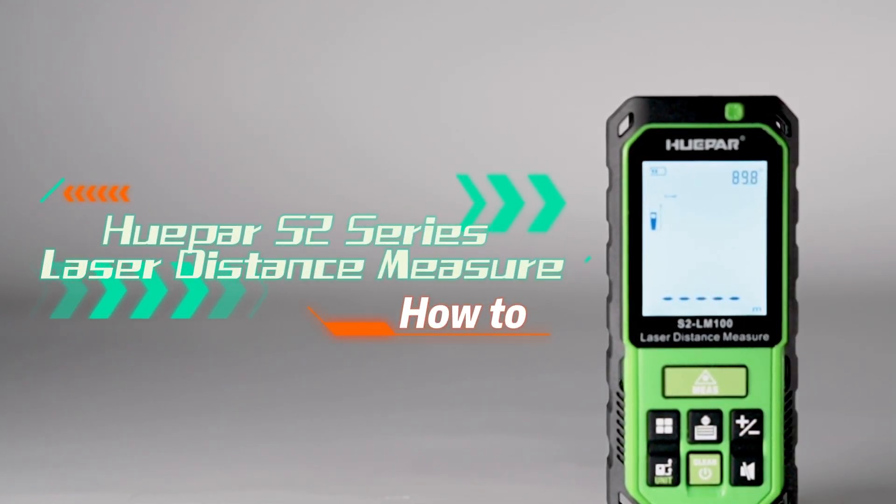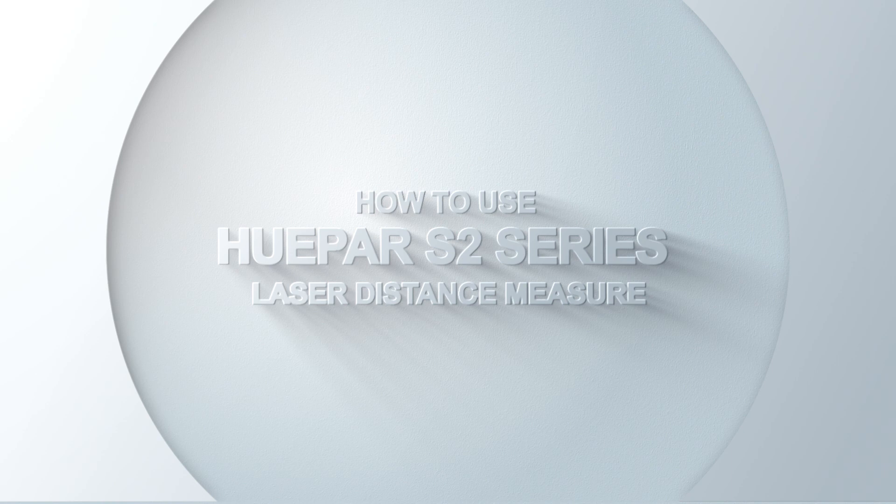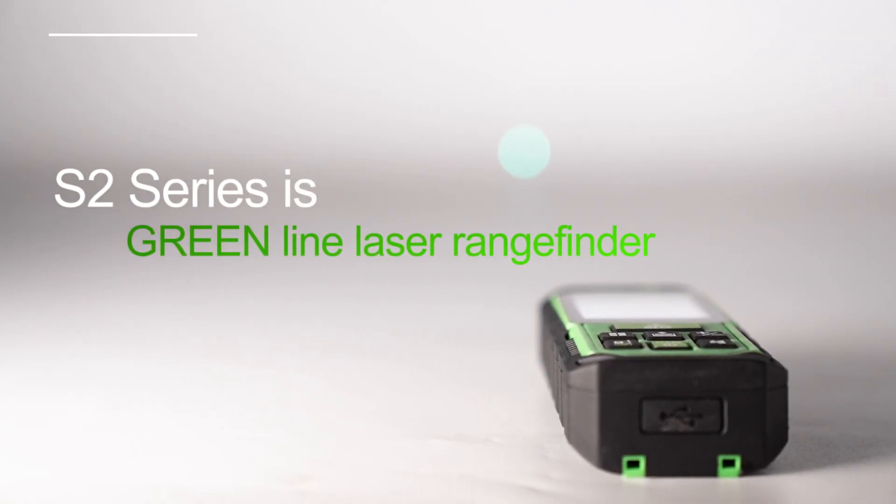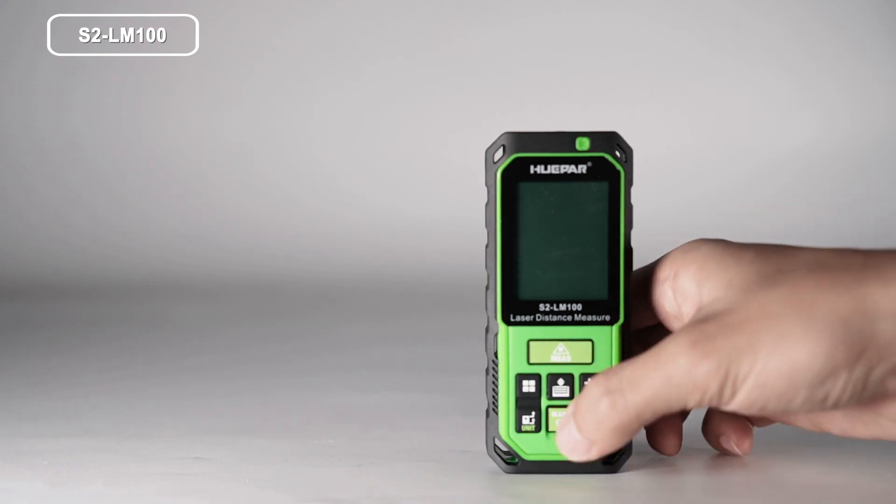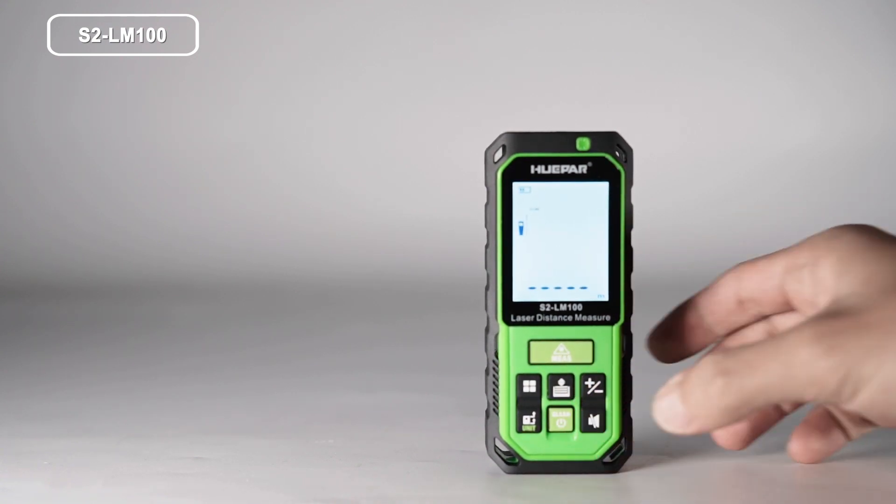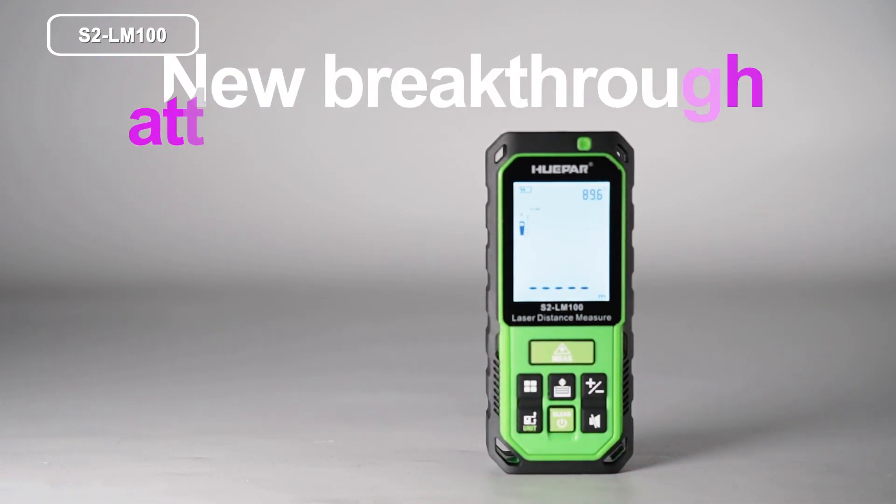How to use Hupar S2 Series Laser Distance Measure. S2 Series is a green line laser range finder. This is the first green light distance meter from Hupar. It means a new breakthrough attempt.